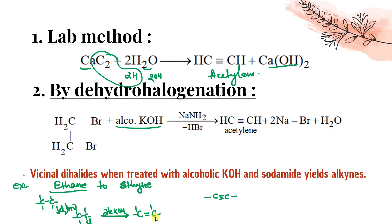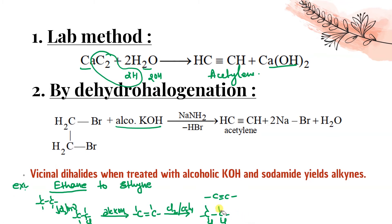Then in presence of alcoholic KOH we get ethene. Next step: add Cl₂ or Br₂ in presence of CCl₄, which gives vicinal dihalide. Then again treat with alcoholic KOH.